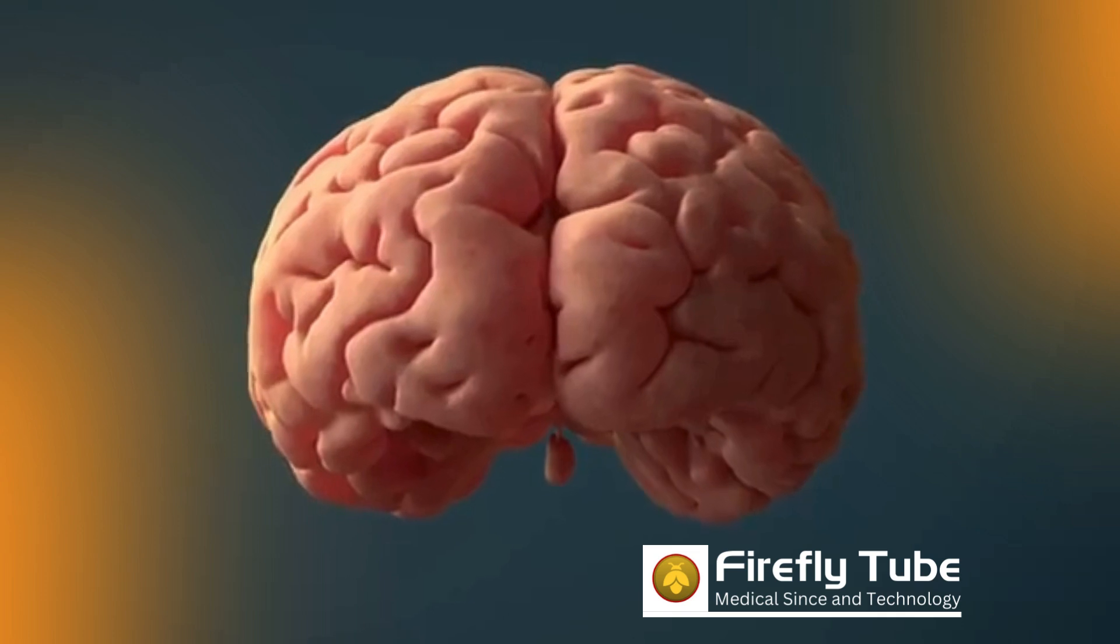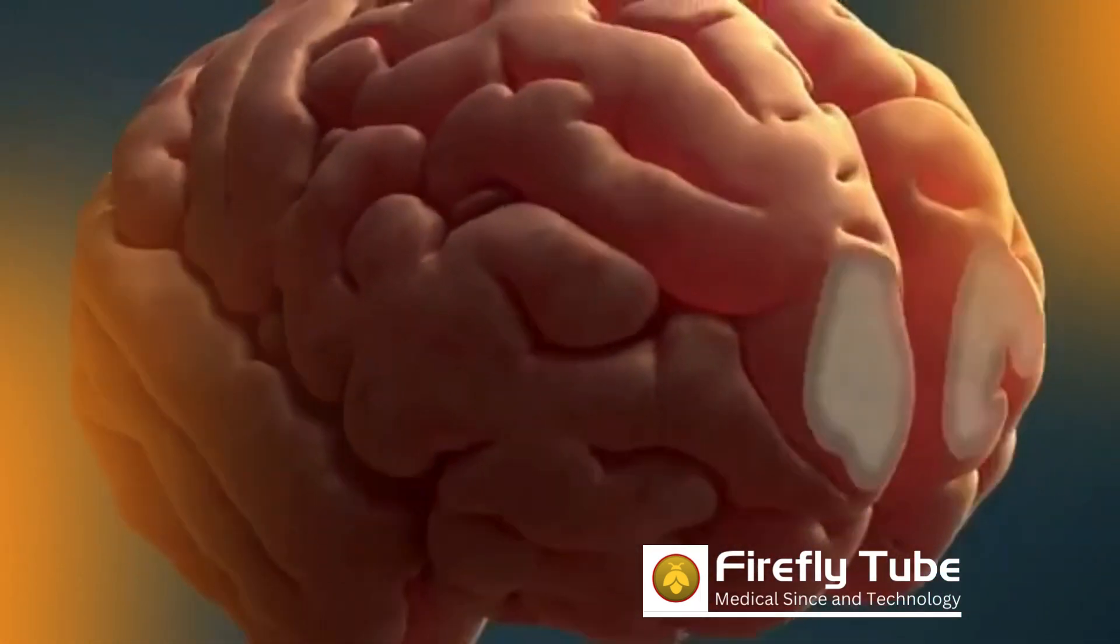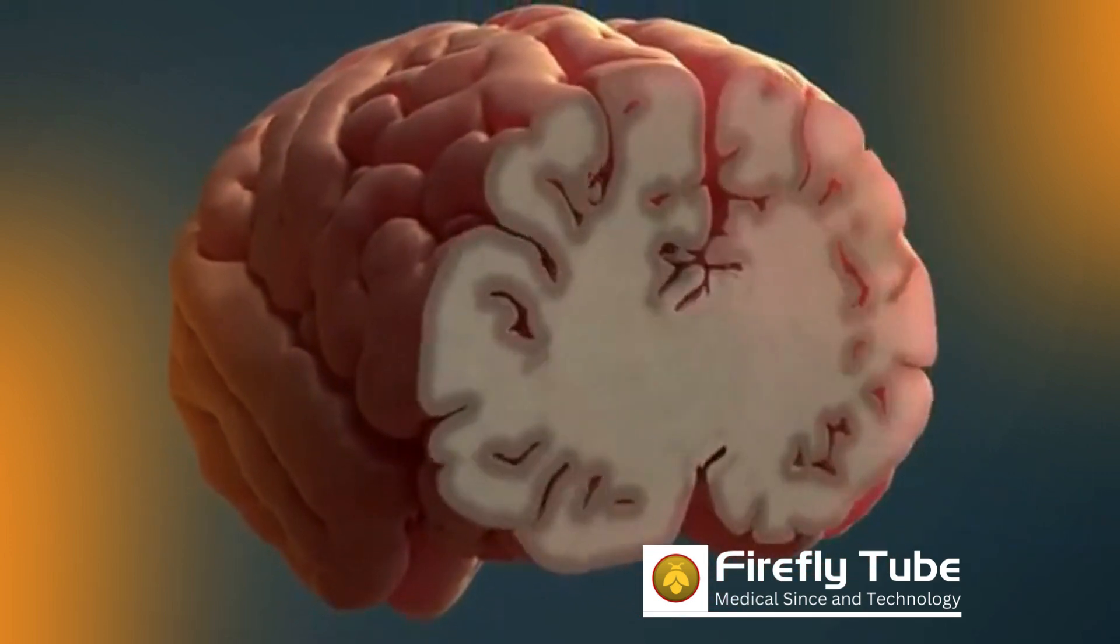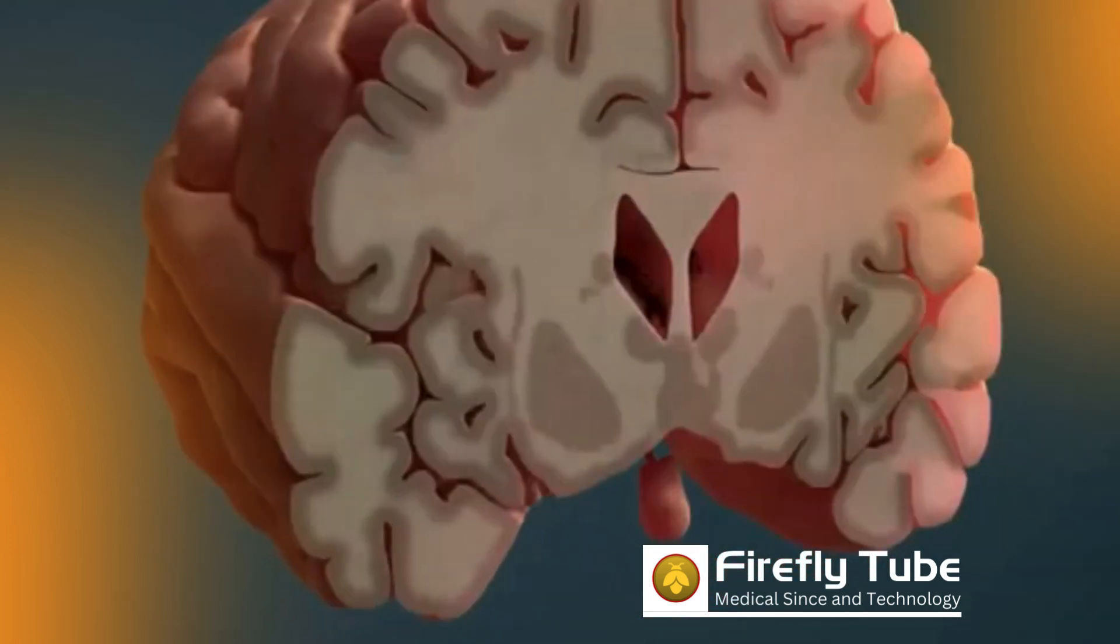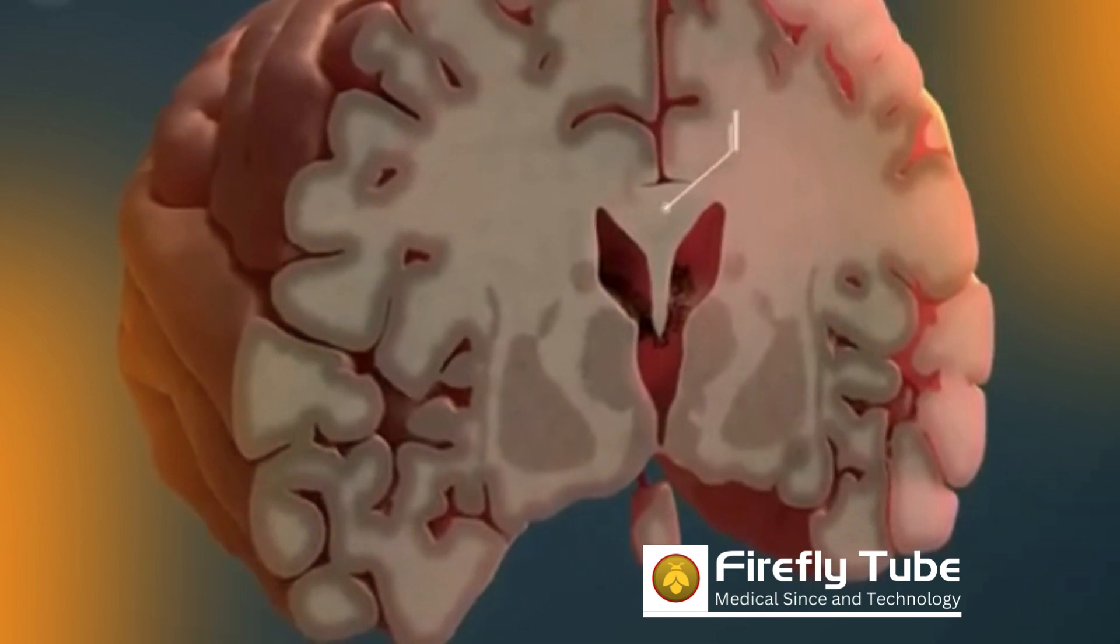The brain has nerve fibers that run from one side to the other, so that both hemispheres of the brain can communicate with each other. The entirety of these nerve fibers is called corpus callosum.